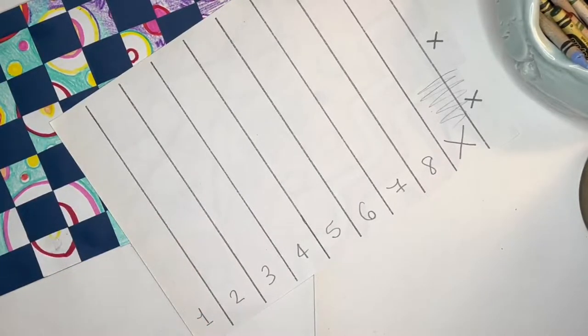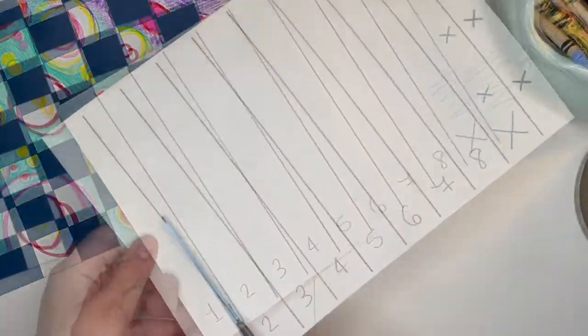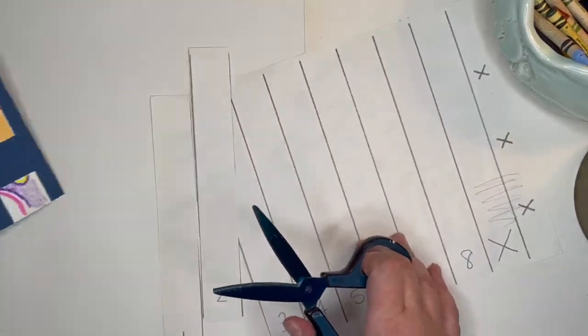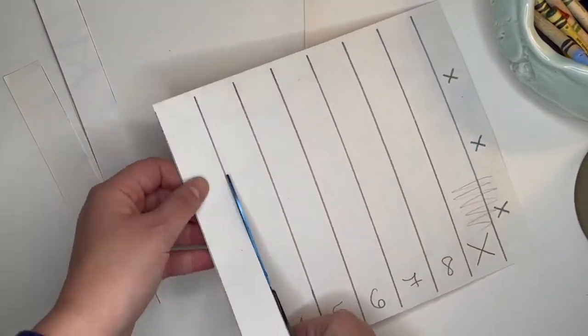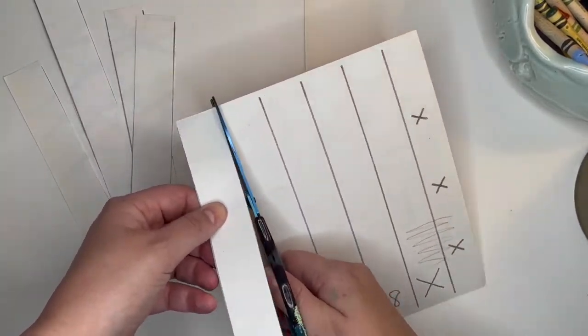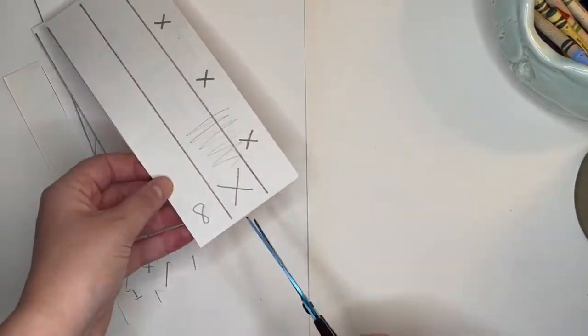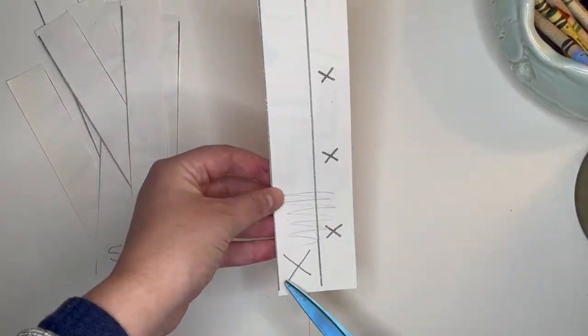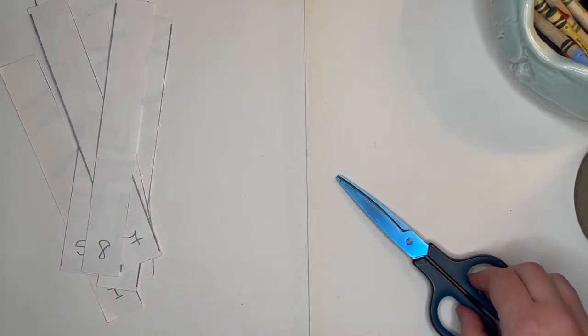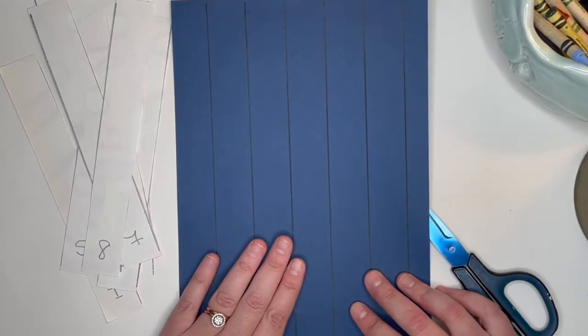Once you have done that, please take your scissors and cut each strip. Next, keep your scissors handy. We are going to now take the blue paper and cut this one to be our weaving template.